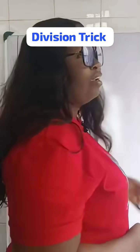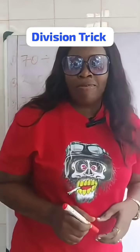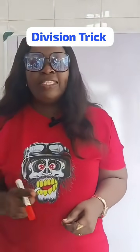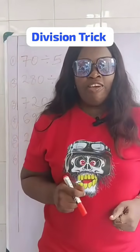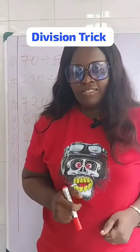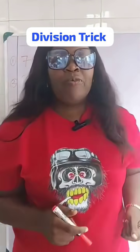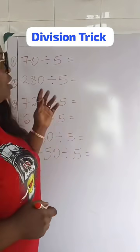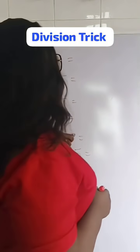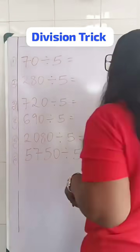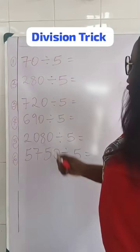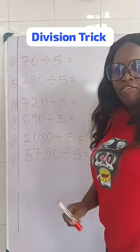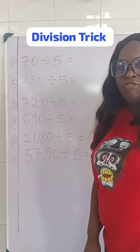Division trick for numbers that end with a 0 and have 5 as their divisor. Let's look at this one on the board — the division trick for numbers that end in 0 and having 5 as their divisor.